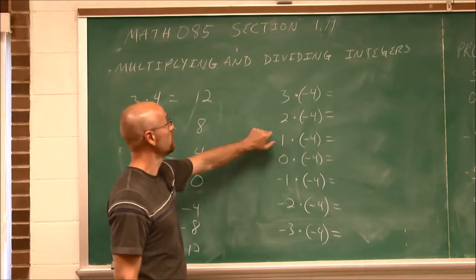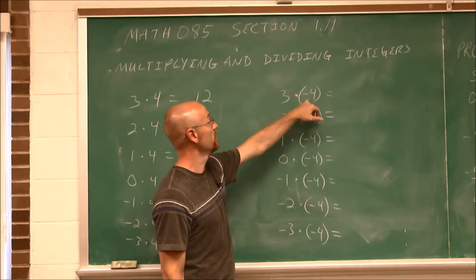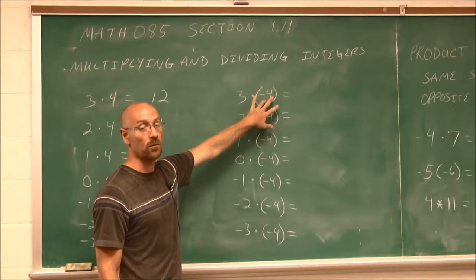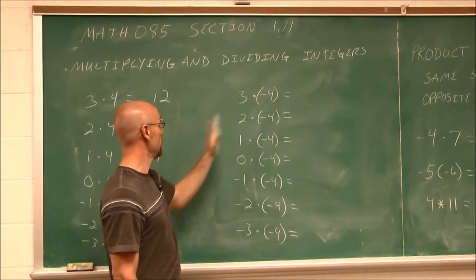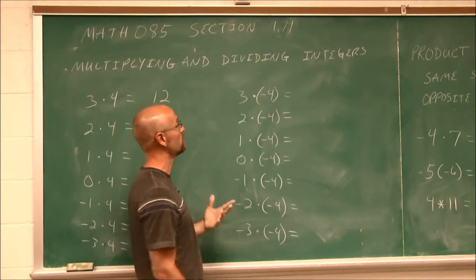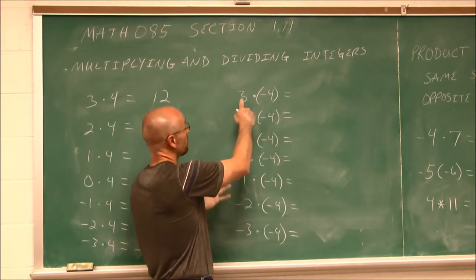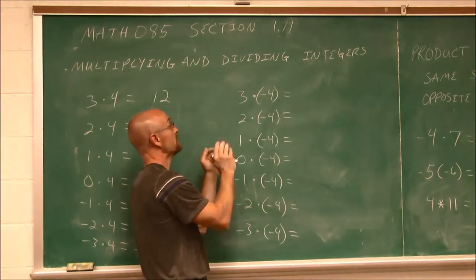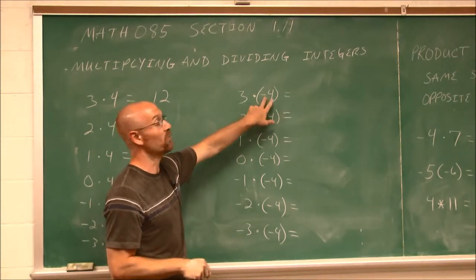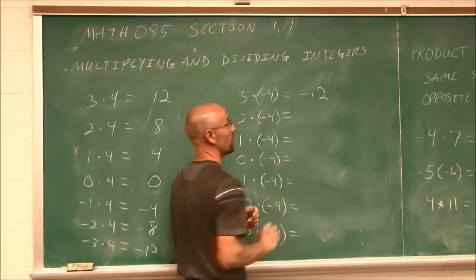Now we're going to multiply a little bit differently — this value is going to be negative. 3 times negative 4: if we use the same concept, there are three people I owe $4 to, so I would owe $12.